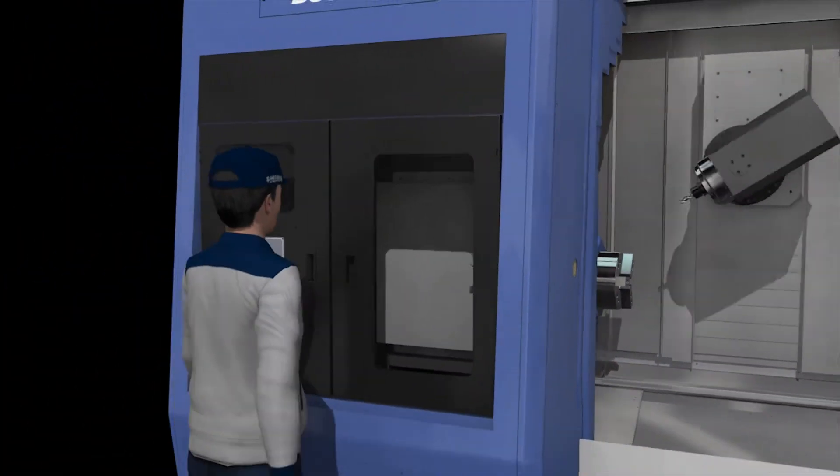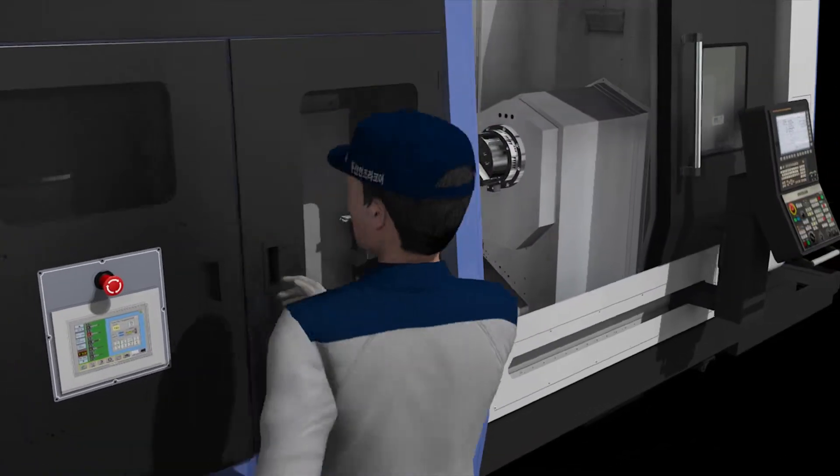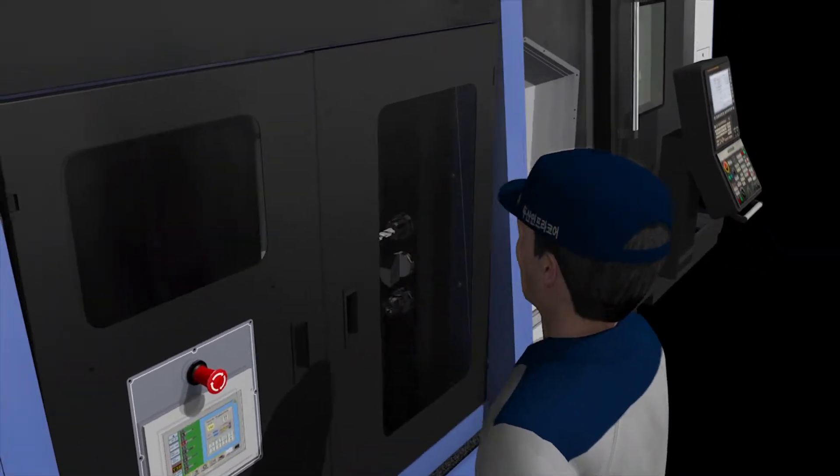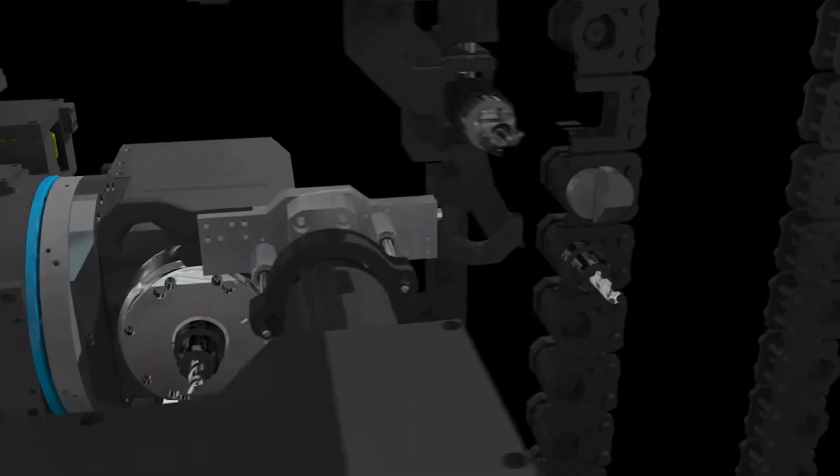The SMX series delivers maximized convenience through the introduction of ergonomic designs. The magazine placed in front helps the user check and replace tools easily and provides a convenient ATC control feature.